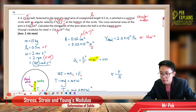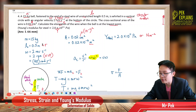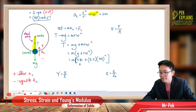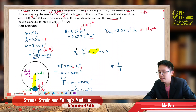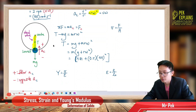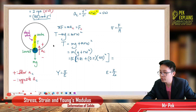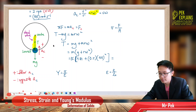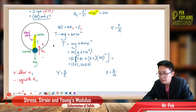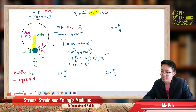The mass is 15 kg. Bringing mg to the other side: T = m(g + rω²) = 15 × (9.81 + 0.5 × (4π)²). After calculating, I get T = 1331.503 Newton. That is the tension in the wire.